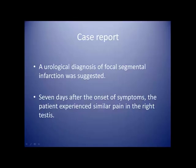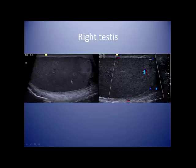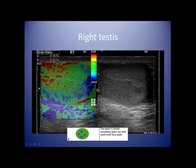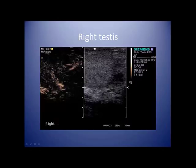A urological diagnosis of focal segmental infarction was suggested. Seven days after the onset of symptoms the patient experienced similar pain in the right testis. Examination of the right testis showed abnormalities at the lower pole with hypoechoic and hyperechoic areas. No internal vascularity on Doppler; the lesion on RTE is almost completely green but with some blue spots — grade 3, still a soft lesion. On administration of microbubbles, there is no internal or peripheral enhancement in particular.